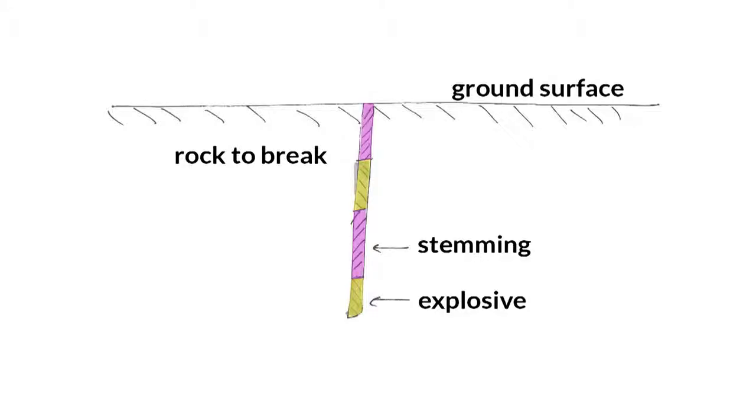This mechanism of breakage is best achieved if the explosives are confined inside the rock. To do so, a hole is drilled in the rock and a series of explosives are lowered into the hole, and stemming is placed in between and above the explosives to form a plug and confine the charge vertically.